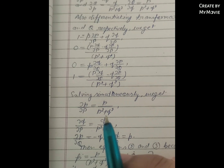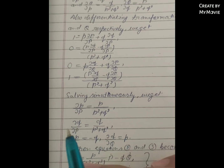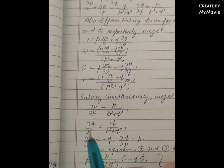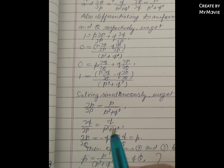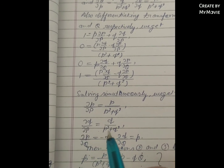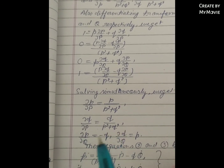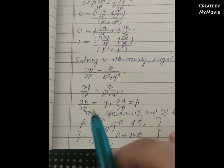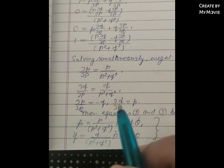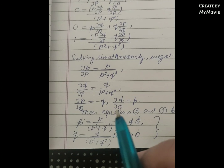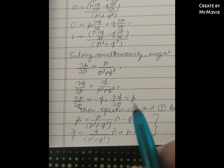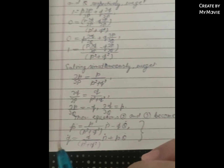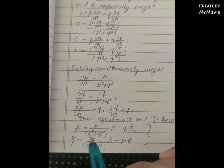Solving these simultaneously, we get: ∂p/∂P = p/(p² + q²), ∂q/∂P = q/(p² + q²), ∂p/∂Q = -q, and ∂q/∂Q = p.